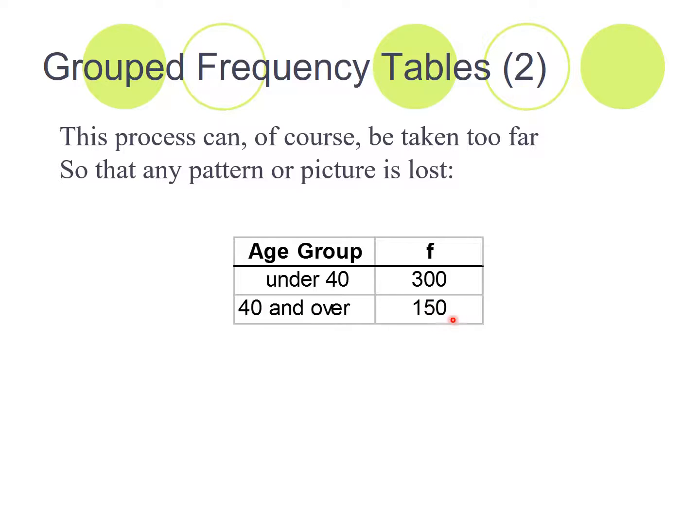40 and over. Are these people all 105? Or are they all 41? We don't know. It's been too summarized. And that's why we insist on having between 8 and 15.